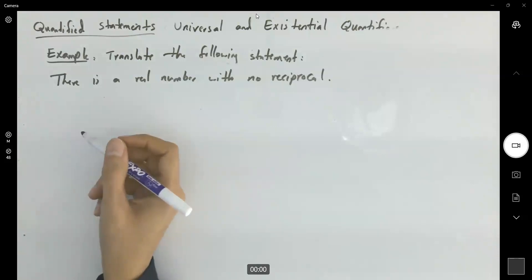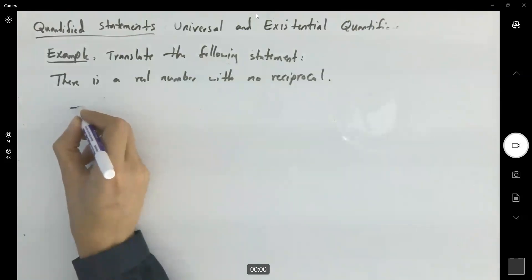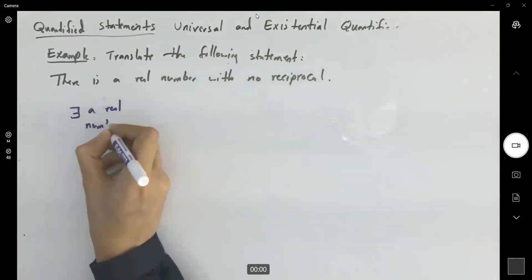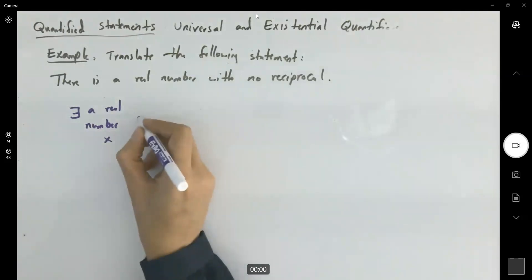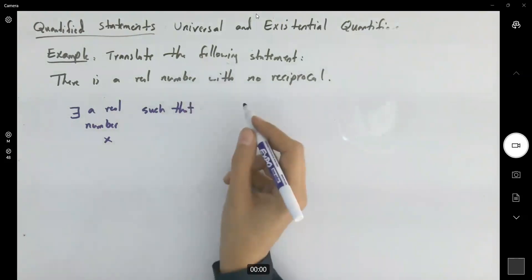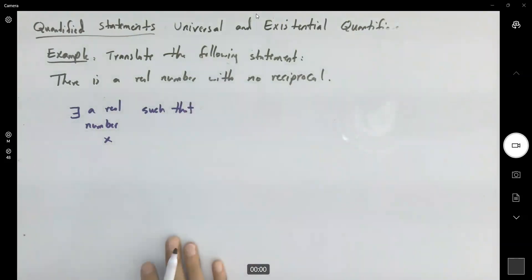It means that we can find, there exists a real number, a real number like what? Like x, like x, such that.